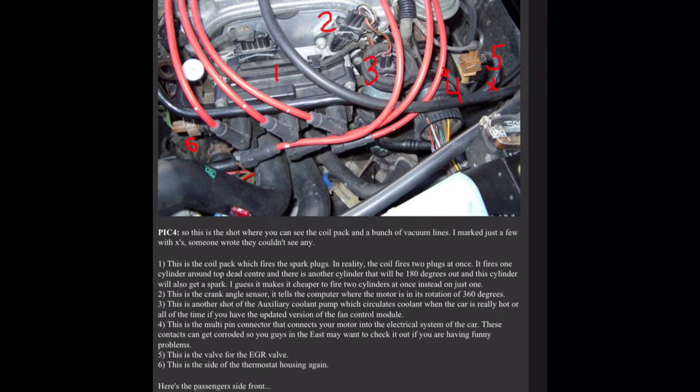This is the coil pack which fires the spark plugs. In reality, the coil fires two plugs at once. It fires one cylinder around top dead center and there is another cylinder that will be 180 degrees out and this cylinder will also get a spark. I guess it makes it cheaper to fire two cylinders at once instead of just one. Two, this is the crank angle sensor. It tells the computer where the motor is in its rotation of 360 degrees. Three, this is another shot of the auxiliary coolant pump which circulates coolant when the car is really hot or all of the time if you have the updated version of the fan control module. Four, this is the multi-pin connector that connects your motor into the electrical system of the car. These contacts can get corroded so you guys in the east may want to check it out if you are having funny problems. Five, this is the valve for the EGR valve. Six, this is the side of the thermostat housing again.